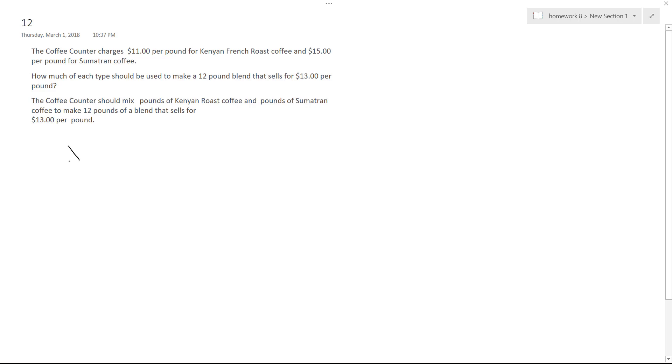So X plus Y equals 12, that's 12 pounds. Then we have this goes for 11X, this goes for 15Y, and it's going to equal 13 times 12. So I'll substitute in for this, we'll make X equal to 12 minus Y.